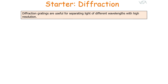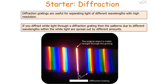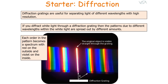Diffraction gratings are useful for separating light of different wavelengths with high resolution. If you diffract white light through a diffraction grating, the patterns due to different wavelengths within the white light are spread out by different amounts. Each order in the pattern becomes a spectrum, with red on the outside and violet on the inside. The zeroth order maximum stays white because all wavelengths pass straight through and arrive with no phase difference whatsoever.